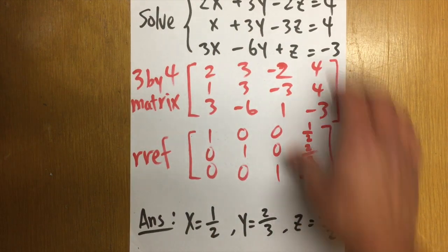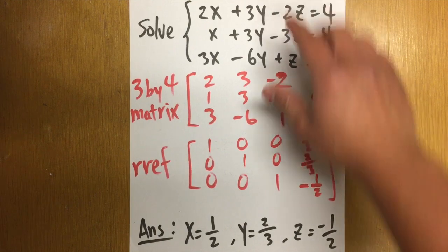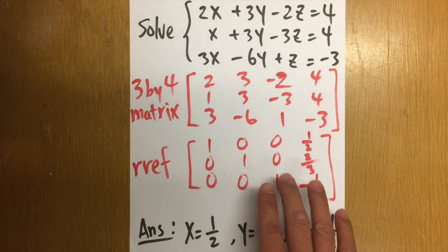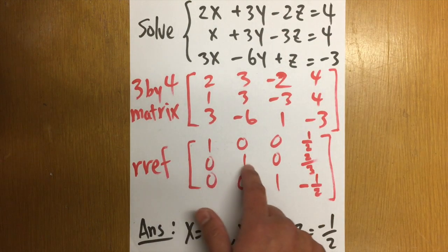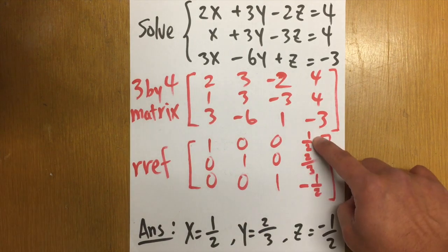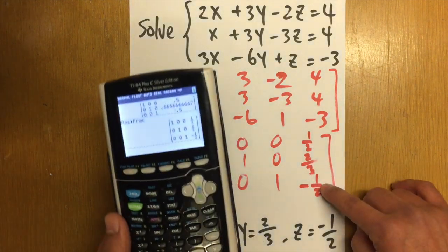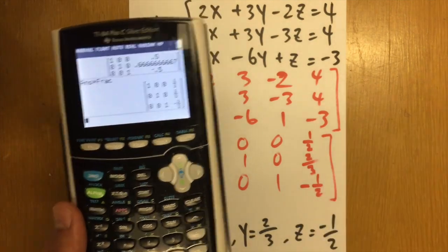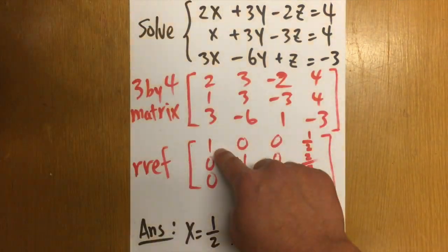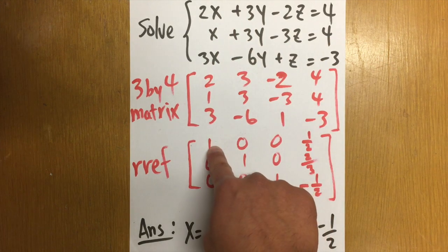So RREF just means that we are going to have the matrix where the diagonals are 1. And this is the good situation. We have all these 1 right here. And then we have 1 half, 2 thirds, and negative 1 half. And this is how we are going to read the answer.